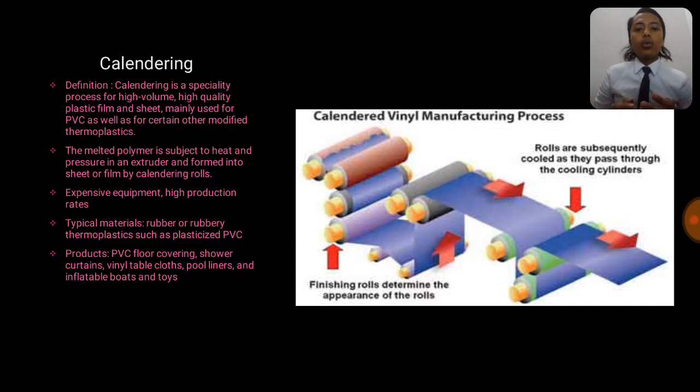Basically, the material being used in this process is rubber or rubbery thermoplastic such as plasticized polyvinyl chloride or PVC. Usually, the product from the calendaring process is PVC floor covering, shower curtains, vinyl tablecloths, pool liners and inflatable boots and toys.